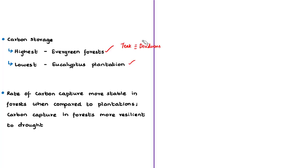Regarding the rate of carbon capture, researchers found that the rate of carbon capture was more stable across natural forests compared to plantations. They also found that carbon capture by natural forests was more resilient to drought conditions. These are the main outcomes of this research study.